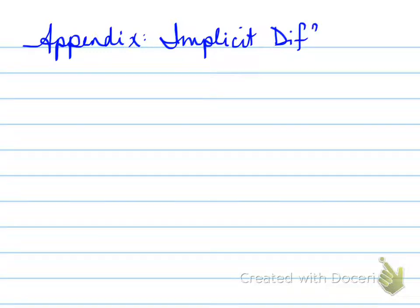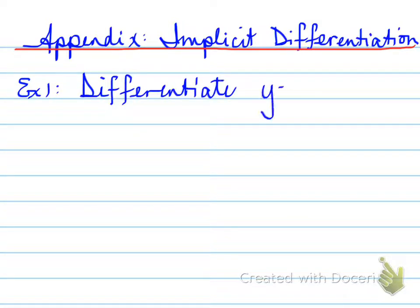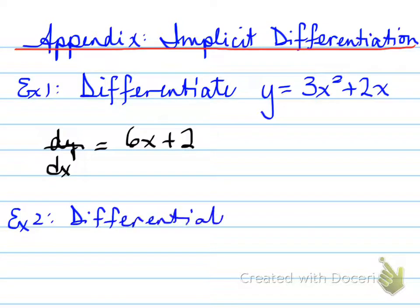So, implicit differentiation — what is it? I'm going to give you an example. You're asked to differentiate a function that looks like this, and you all know how to find the derivative: dy/dx is equal to 6x plus 2. Now, let's say you are asked to differentiate something where it's a combination of x's and y's.